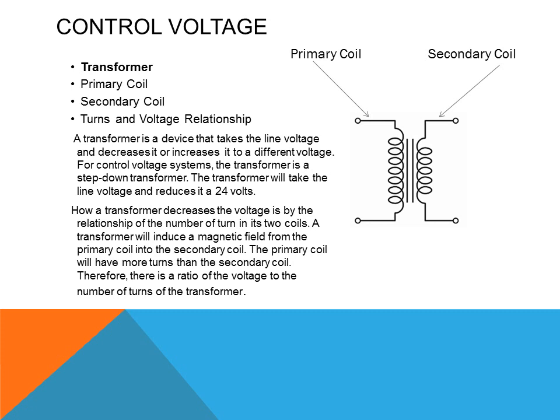A transformer is a device that takes line voltage and decreases or increases it to a different voltage. For control voltage systems, the transformer is a step-down transformer, reducing line voltage to 24 volts. A transformer decreases voltage by the relationship of the number of turns in its two coils. It induces a magnetic field from the primary coil into the secondary coil, with the primary coil having more turns than the secondary coil, creating a voltage-to-turns ratio.